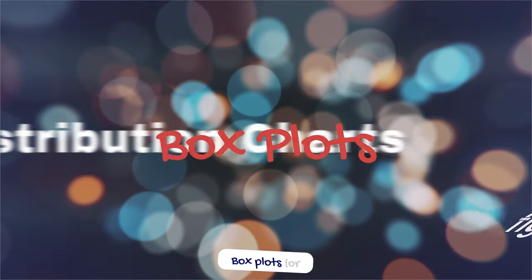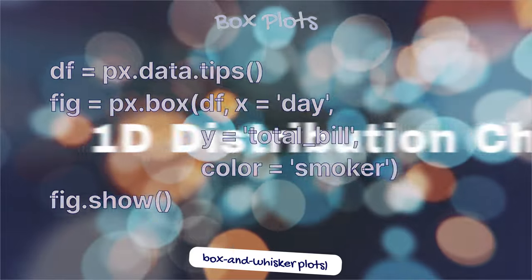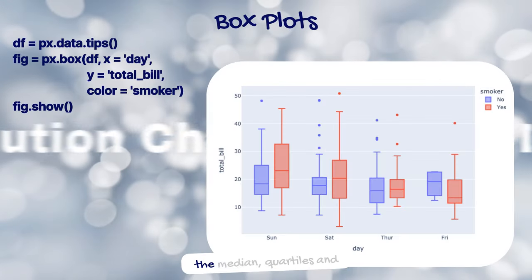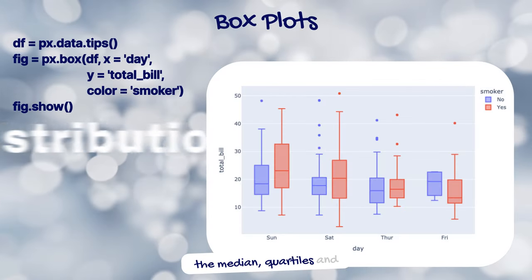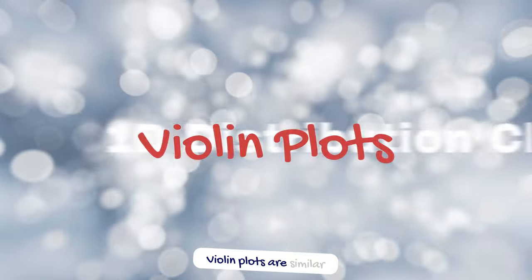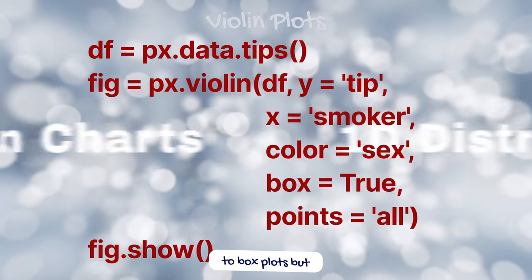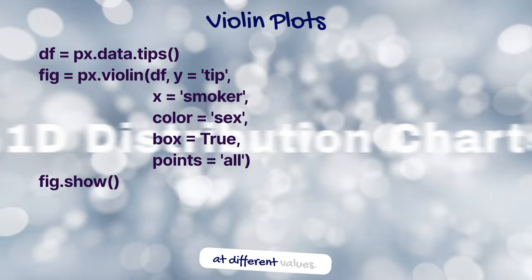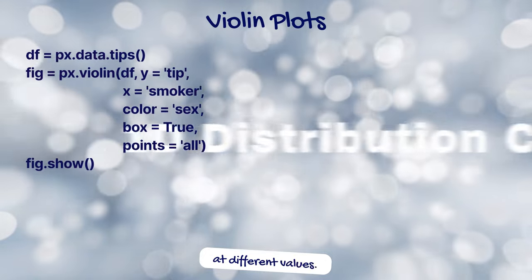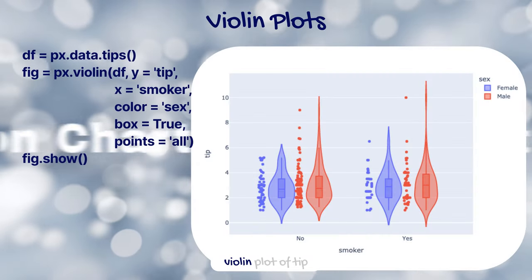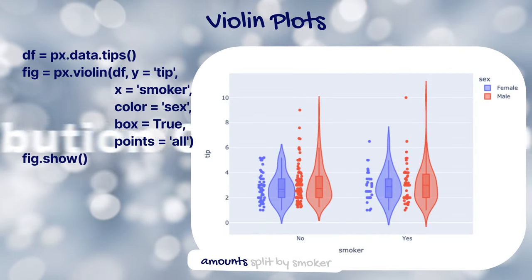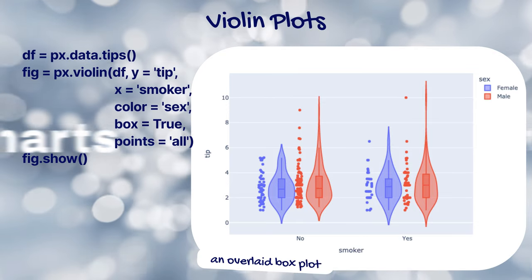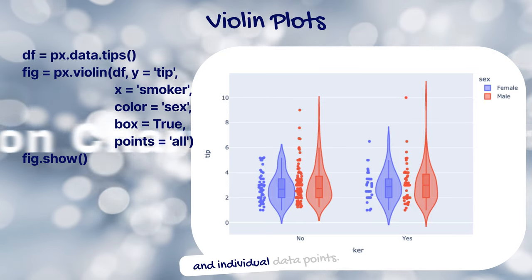Box plots, or box and whisker plots, summarize the distribution of a variable by displaying the median, quartiles, and outliers. Violin plots are similar to box plots but also show the probability density of the data at different values. This code creates a violin plot of tip amounts, split by smoker status and sex, with an overlaid box plot and individual data points.